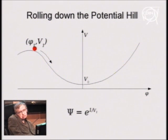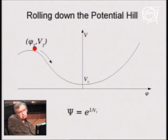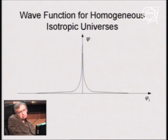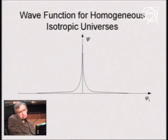At first sight, this would seem to imply that the universe started with phi 1 near 0. Such a universe would be an empty, de Sitter-like space, rather than the matter-filled universe we observe, with an early period of very high density. The explanation for this discrepancy is that so far we have considered the wave function only for homogeneous isotropic universes.